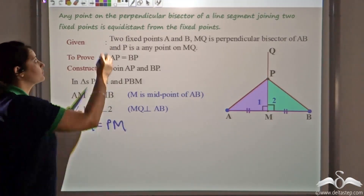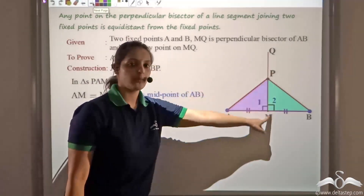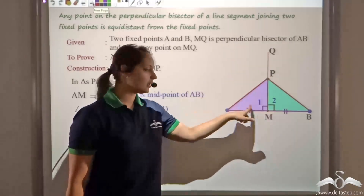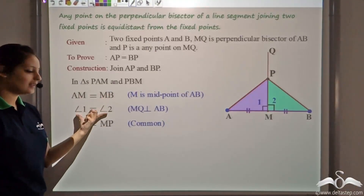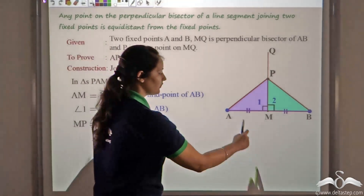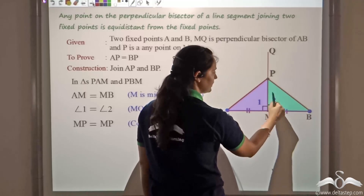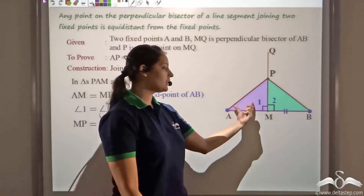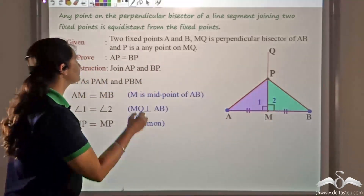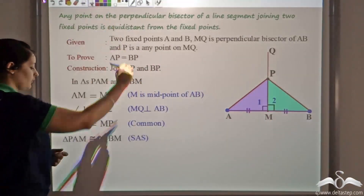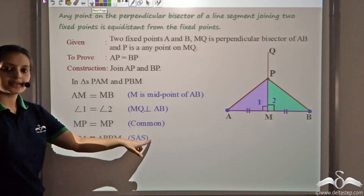MP is common in both the triangles. So I have a pair of sides, a pair of angles, and another pair of sides — that is side, angle, side. I can say that these two triangles are congruent by SAS: triangle PAM and triangle PBM are congruent by side, angle, side.